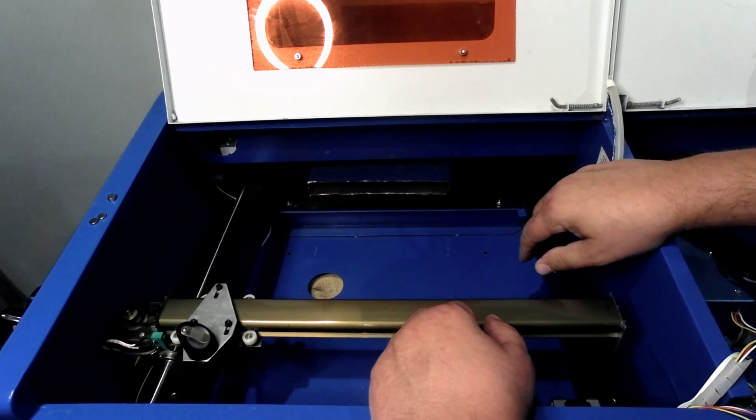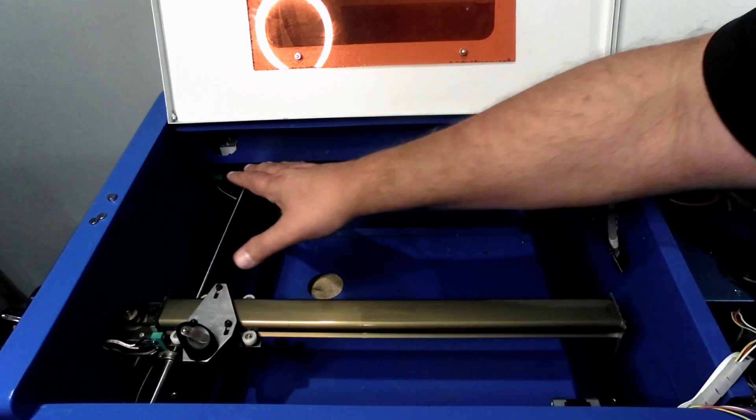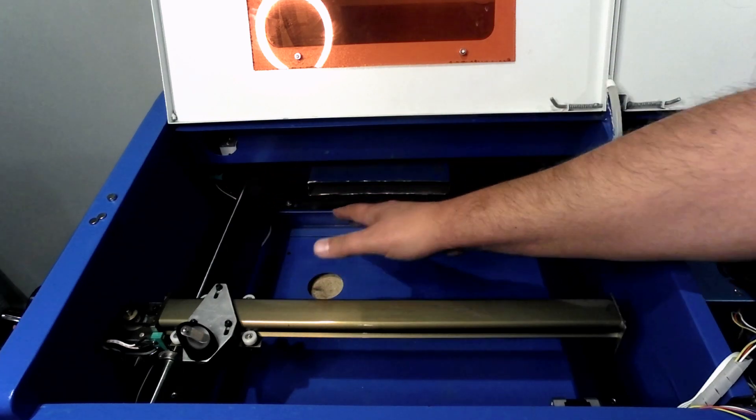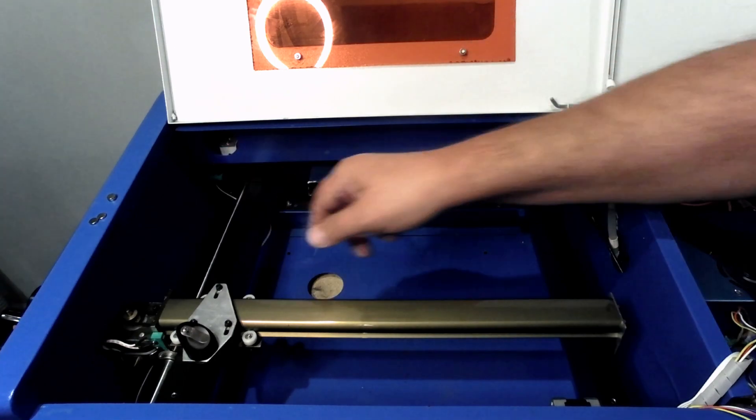I need to make sure that this gantry is not racked or ratcheted in a diagonal direction at all. It needs to be perfectly square to this beam.